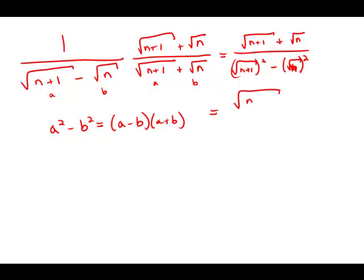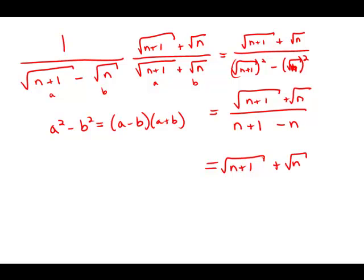And what happens when I square those — rewriting the denominator and numerator — I get n plus 1 and then minus n. Well, n plus 1 minus n is just 1. And so that whole thing simplifies to just what's in the numerator, which is radical n plus 1 plus radical n. And this is answer choice E.